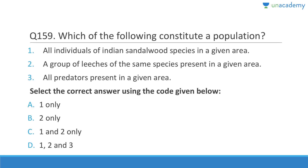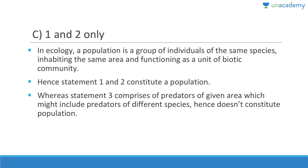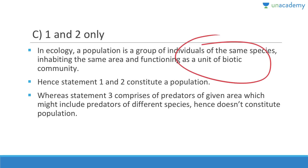Which of the following constitute a population? All individuals of Indian sandalwood species in a given area — correct. A group of leeches of the same species in a given area — also correct. All predators in a given area — wrong, because it includes predators of different species. A population is a group of individuals of the same species inhabiting the same area and functioning as a unit of the biotic community.